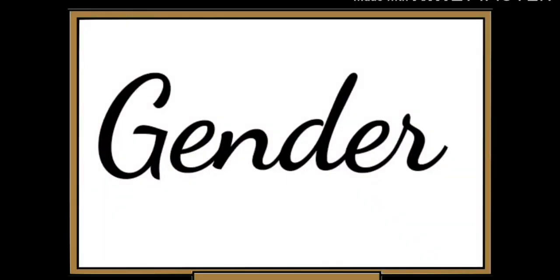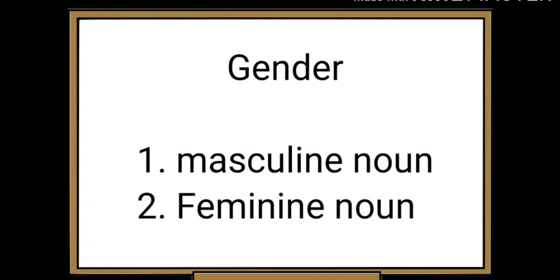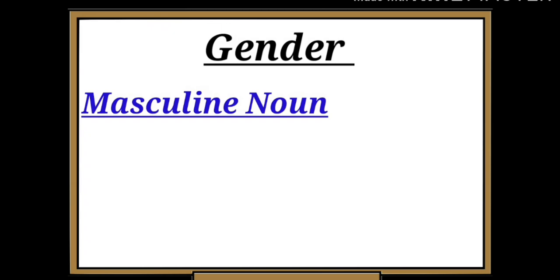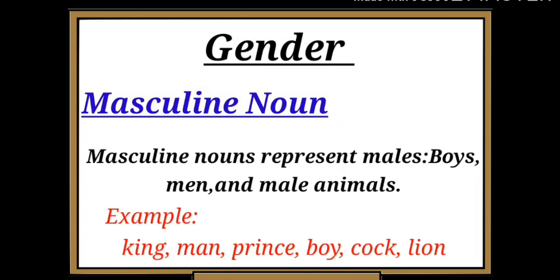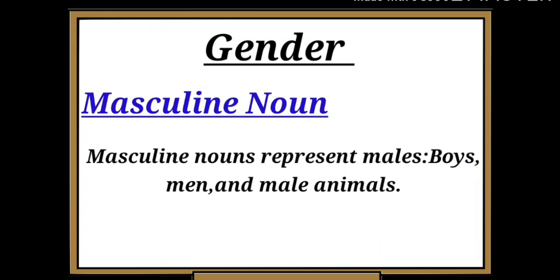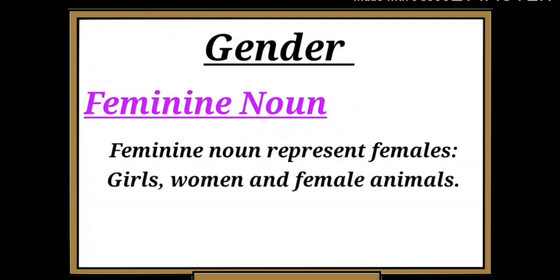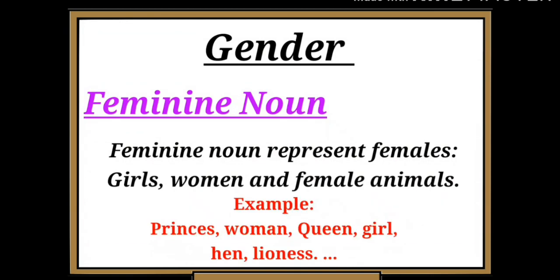Now let's see the last and final type: noun gender. Words can be divided into masculine nouns and feminine nouns. First one: masculine nouns. Masculine nouns represent males like boys, men, and male animals. For example: king, man, prince, boy, cock, lion, etc. Next: feminine nouns. Feminine nouns represent females like girls, women, and female animals. For example: princess, woman, queen, girl, hen, lioness, etc.